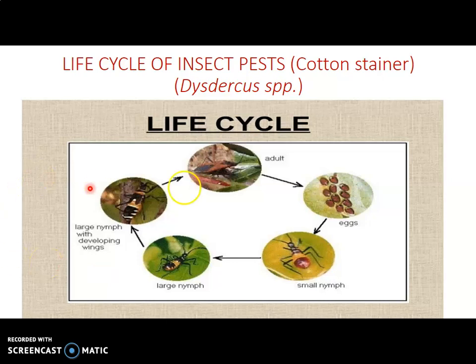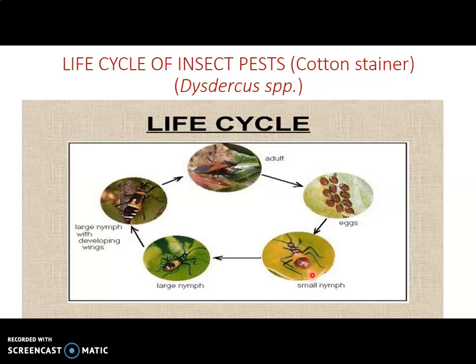The cutting stainer undergoes incomplete metamorphosis. This is the adult stage of a cutting stainer. It lays about a hundred eggs in moist soil. The eggs hatch and form a small nymph, which moults about five times — progressing through small nymph, large nymph, and large nymph with developing wings — before reaching the adult stage. So there are only three stages: adult, egg, and nymph.